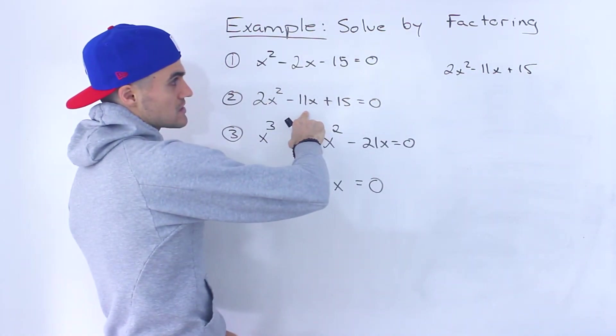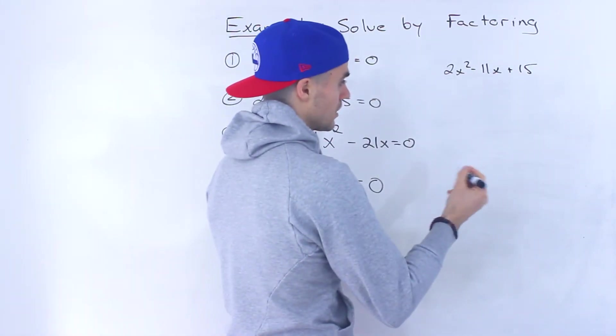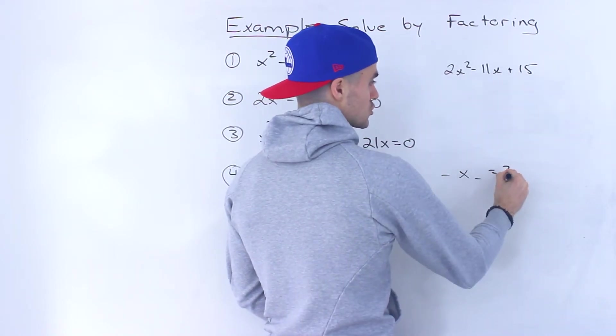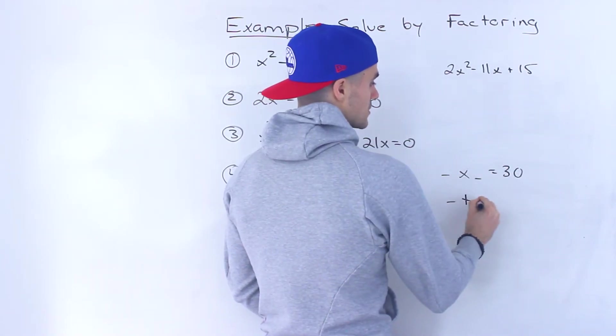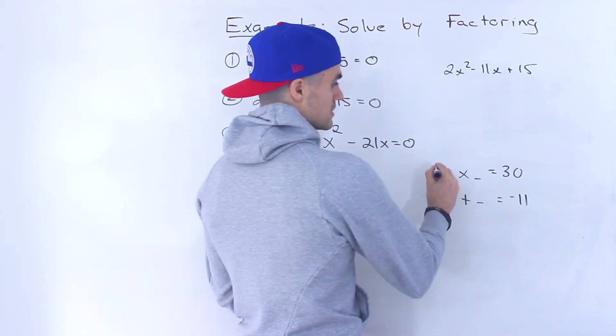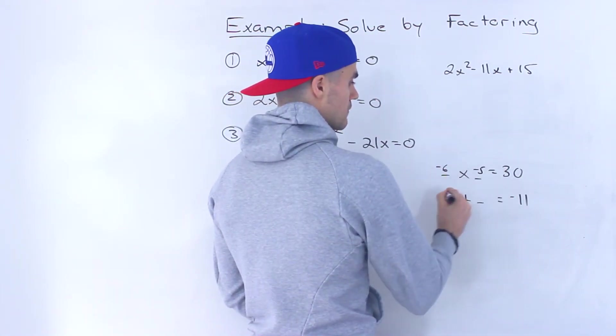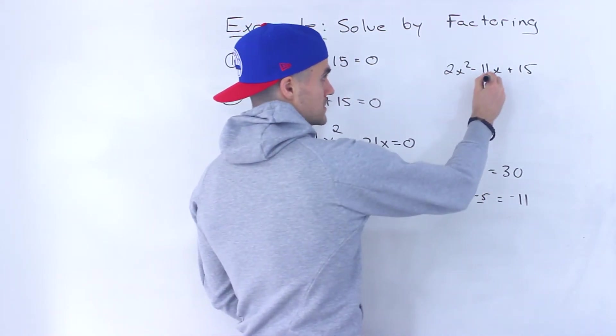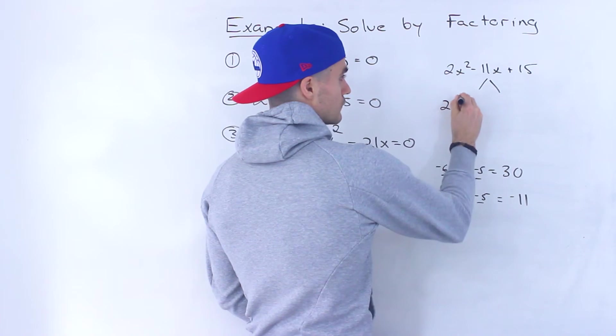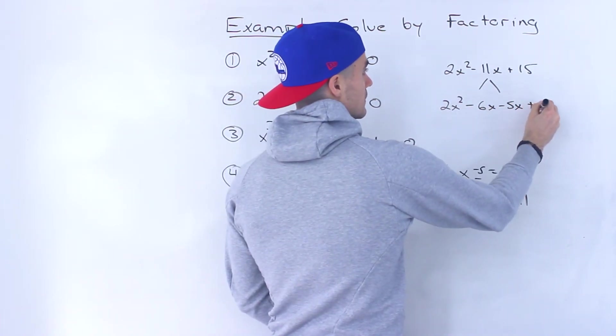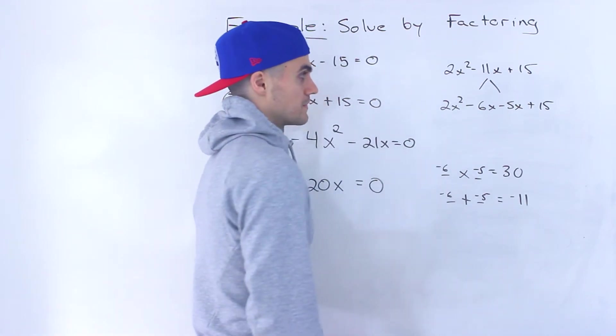So here we got 2x² - 11x + 15. Same thing, I'm going to factor this using decomposition. Two numbers that multiply to a times c, which is 30, and add up to the b value, which is -11. This would be -6 and -5. So we decompose this -11x to -6x - 5x, and then we got +15.